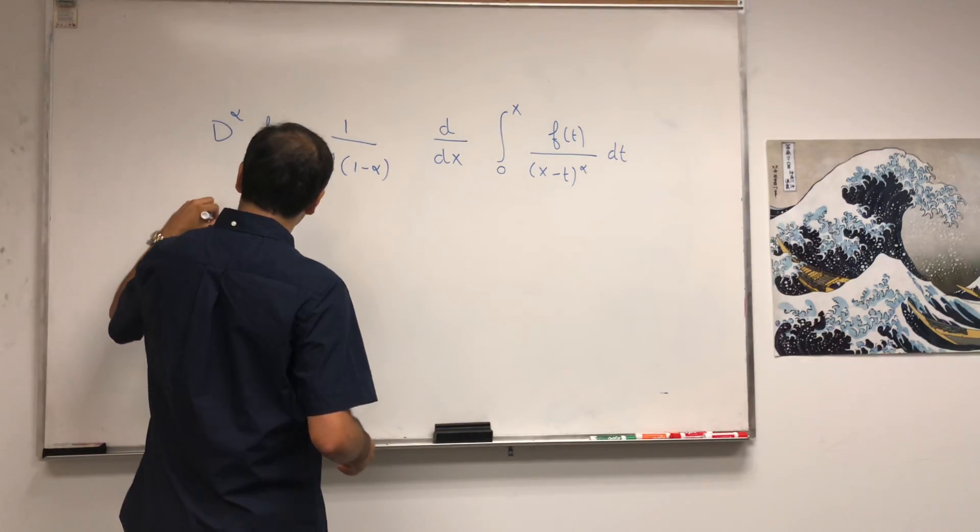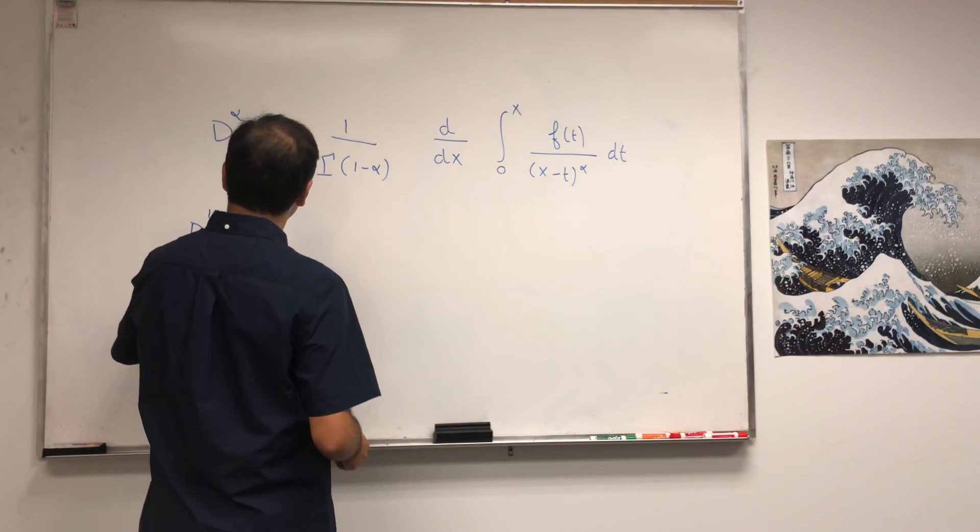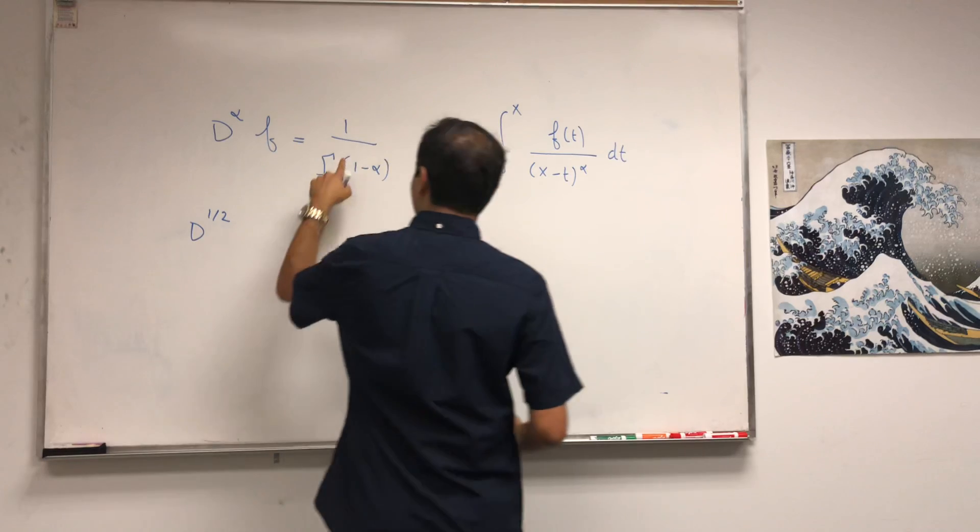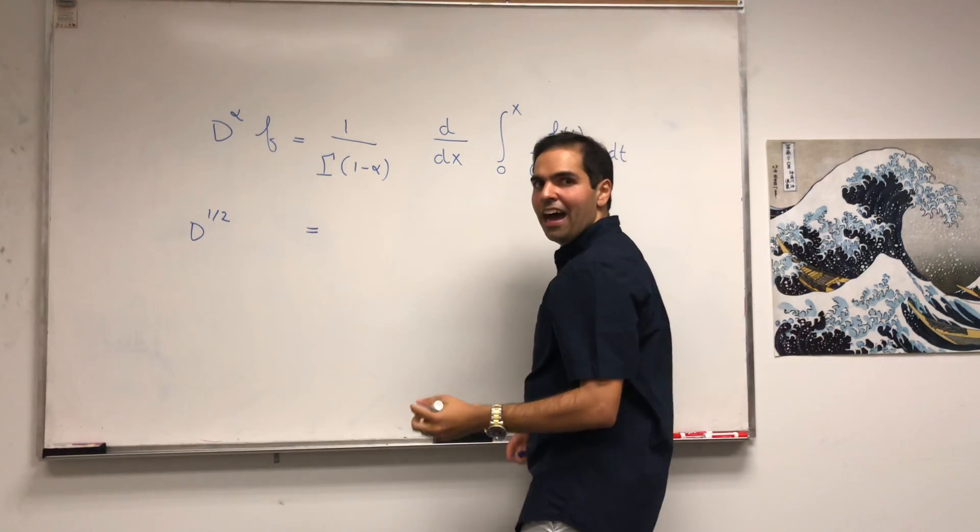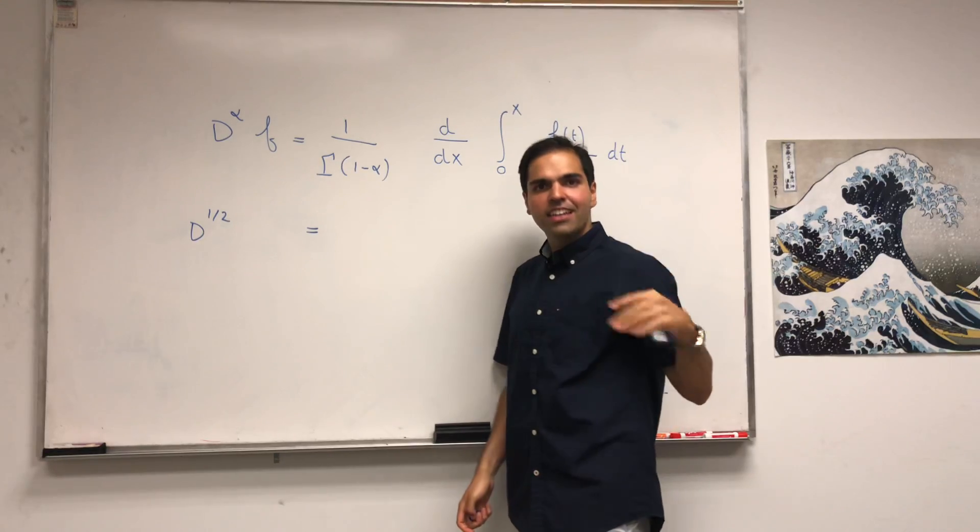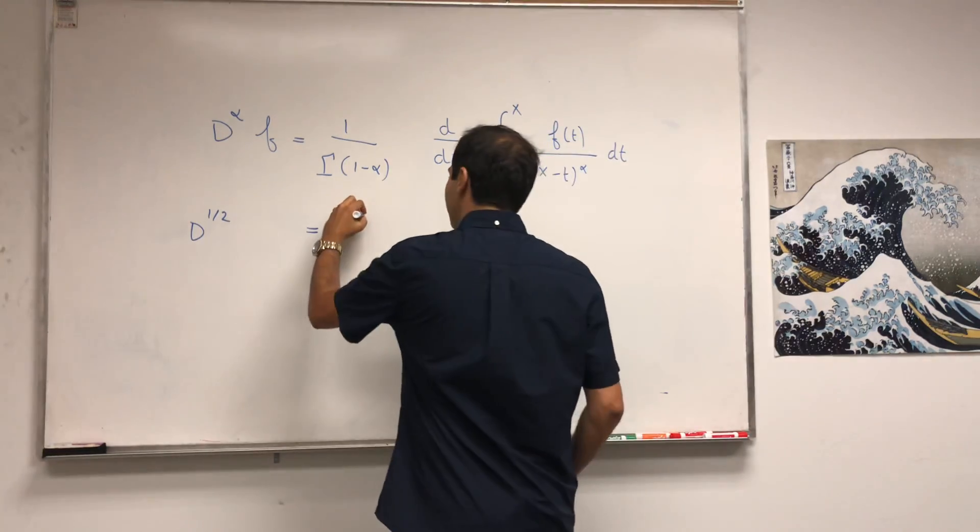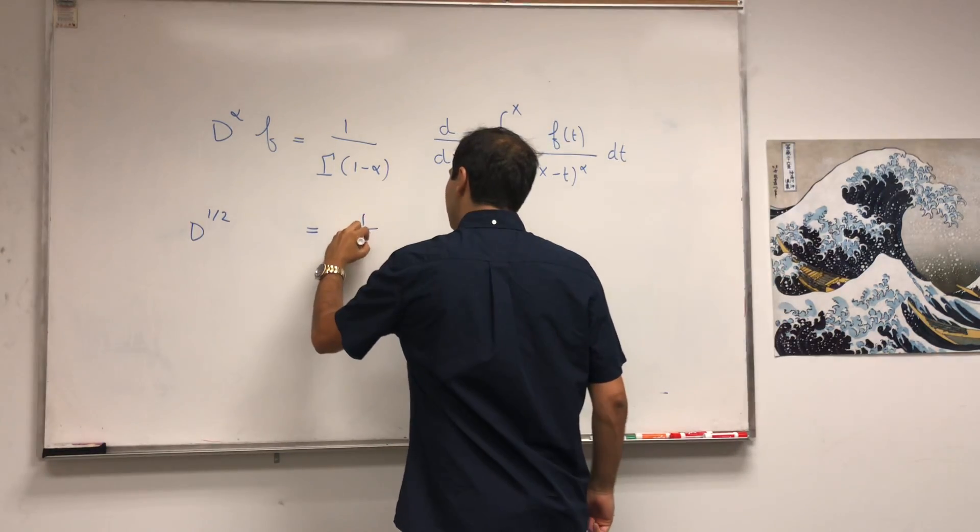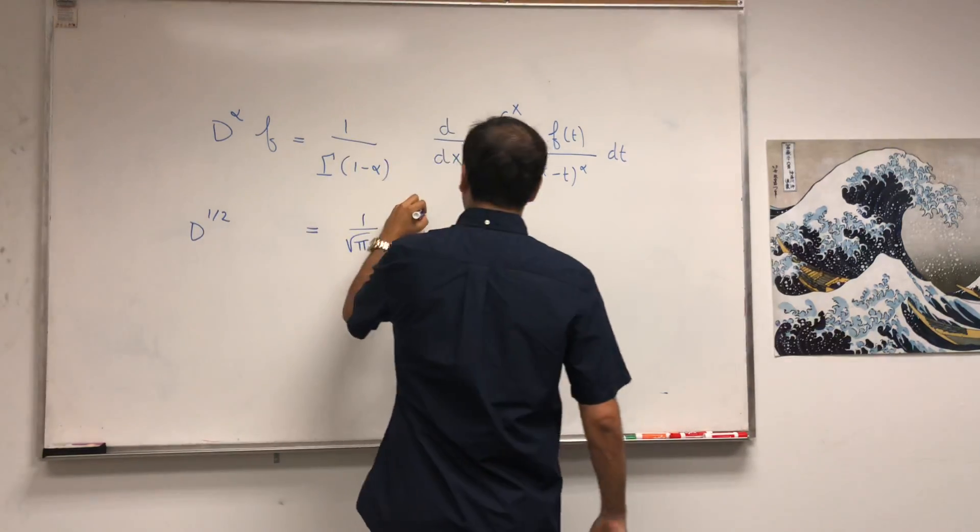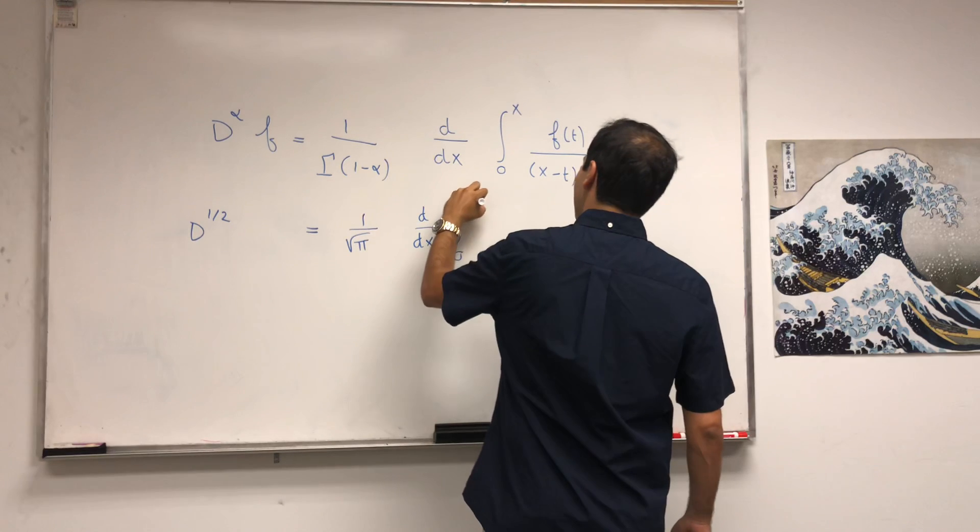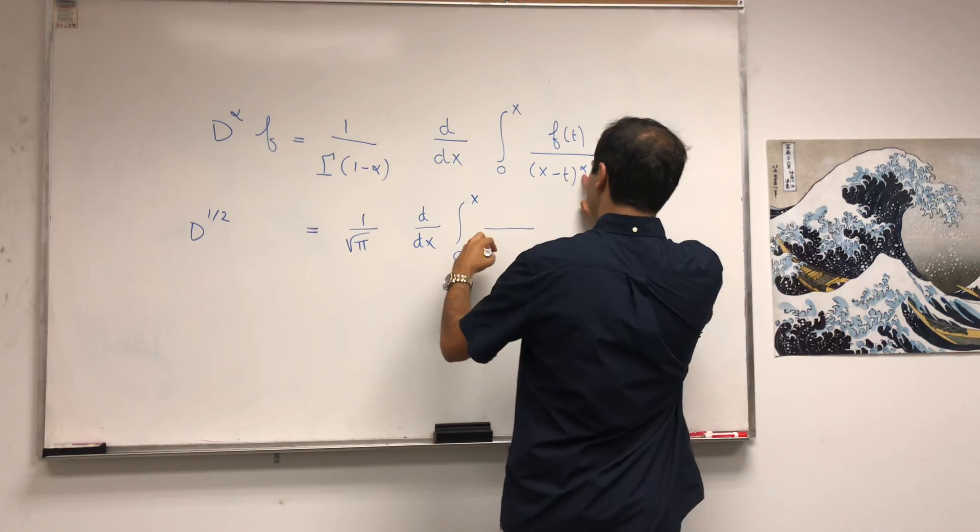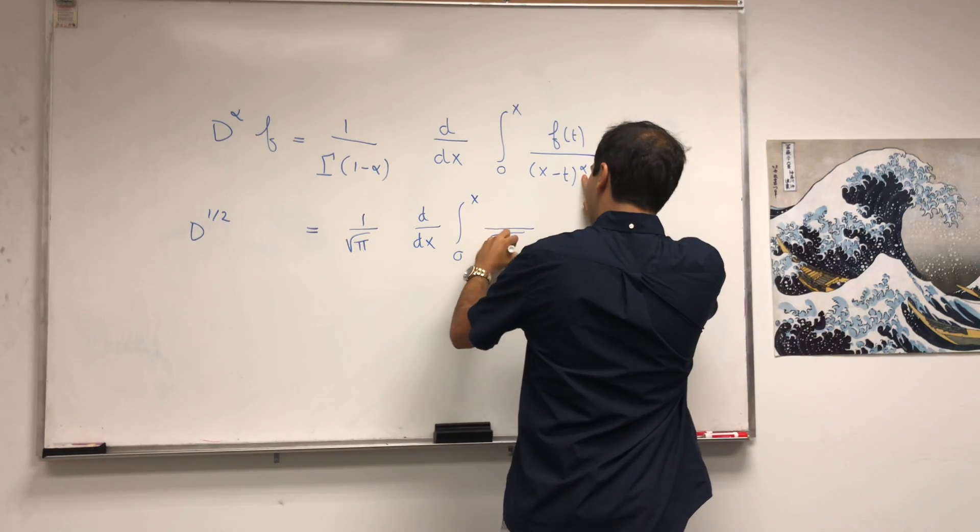In particular, if you let alpha be 1/2, then that constant becomes 1 over gamma of 1/2, which I calculated in my first half derivative video to be 1 over square root of pi.